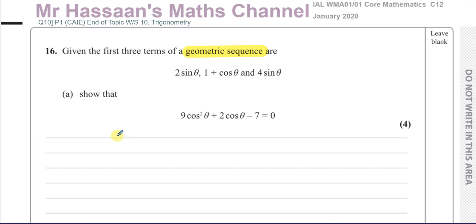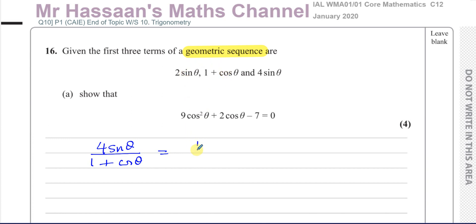We can set up an equation: the third term divided by the second term — that's 4 sin θ divided by (1 + cos θ) — equals the second term divided by the first term — that's (1 + cos θ) divided by 2 sin θ. Both equal the common ratio.